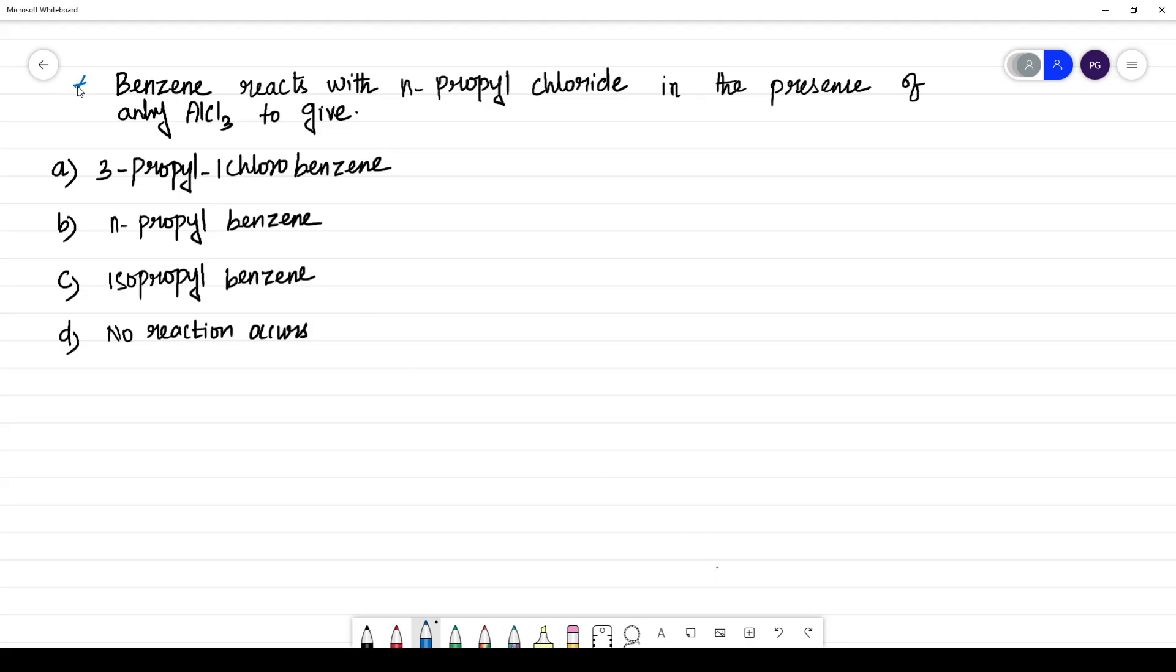Benzene reacts with N-propyl chloride in the presence of anhydrous AlCl3. So here, what is benzene? You know benzene is C6H6.